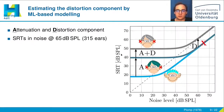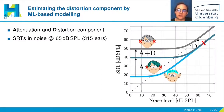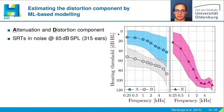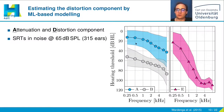To estimate the D component, we took SRTs measured in stationary noise presented at 65 dB SPL from 315 ears. We had three different groups: Group A with better audiograms, from normal hearing to slight to moderate hearing impairment, and Group B with moderate to severely impaired hearing listeners.